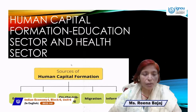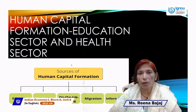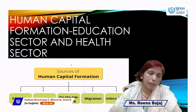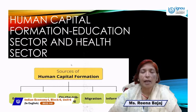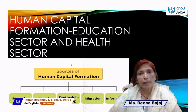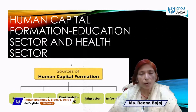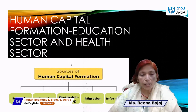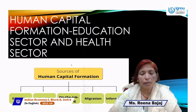What are the sources of Human Capital Formation? There are five sources. One is Education, second is Health, third is On-the-Job Training, fourth is Migration, and fifth is Information. These all resources make Human Capital Formation.